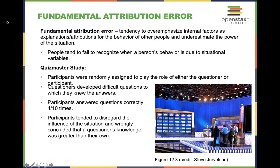Have you ever been driving and somebody speeds past you, cuts you off, or pulls out in front of you? We as humans may fall victim to the fundamental attribution error — we say they're driving erratically because they're inherently a jerk. But we overemphasize the internal about somebody and underestimate the power of the situation they may be going through.